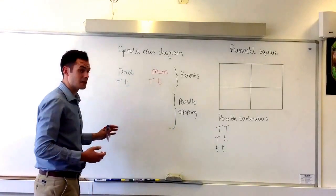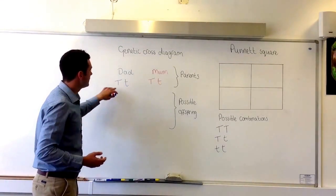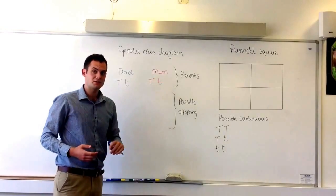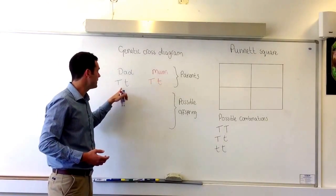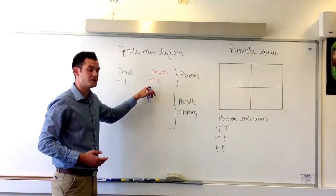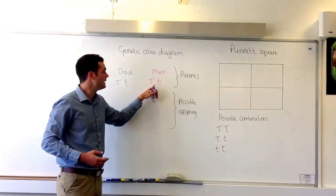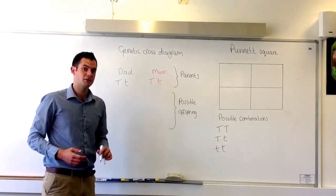Let's complete this genetic cross diagram. You can see here we have the information from the parents. The dad has a dominant T for rolling and a recessive t for non-rolling. The mum also has a dominant T for rolling and a recessive t for non-rolling.